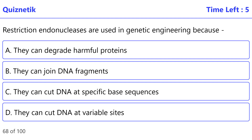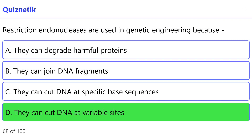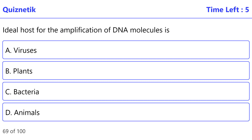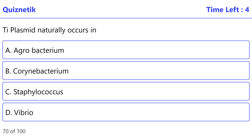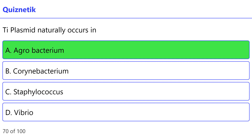Restriction endonucleases are used in genetic engineering because — the correct option is D — they can cut DNA at variable sites. The ideal host for the amplification of DNA molecules is — the correct option is C — bacteria. High plasmid naturally occurs in — the correct option is A — Agrobacterium.